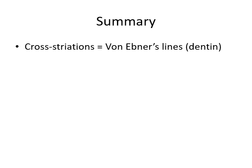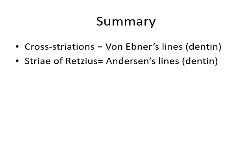To summarize: cross striations in enamel are equivalent to von Ebner's lines in dentine — both are short period daily deposition lines. The long period lines are striae of Retzius in enamel, showing weekly enamel deposition, equivalent to Andresen's lines in dentine, showing weekly dentine deposition. Finally, the lines of Salter in cementum show annual deposition of cementum. This was a brief summary of incremental lines.